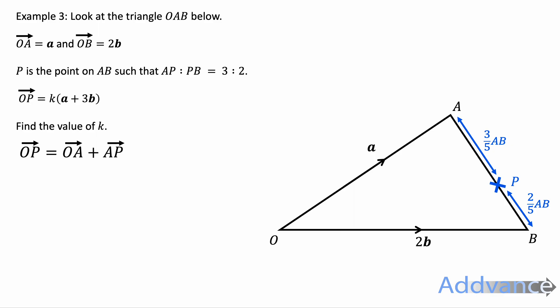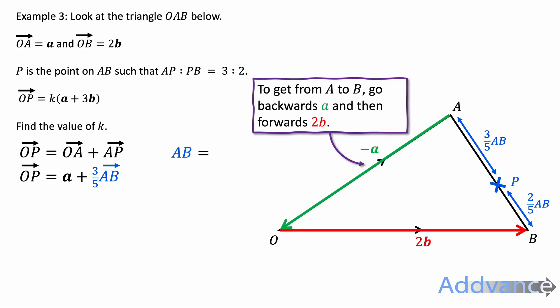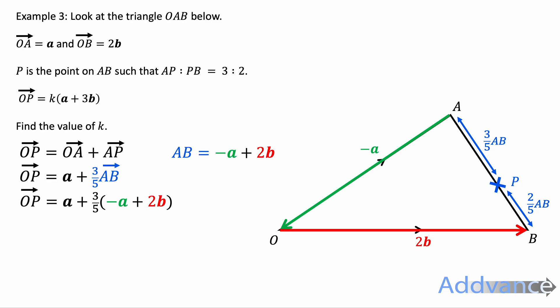We're now trying to find OP. To go from O to P, we're going to go from O to A, and then A to P. OA is going up the vector a. That is given very simply in the question, so you can replace that with a. AP is 3 fifths of AB. It's going to replace that like that. However, now we need to replace AB in terms of a's and b's. AB is going backwards a and forwards 2b. So it's going to be minus a plus 2b. That's an expression for AB, and we're going to substitute that in.